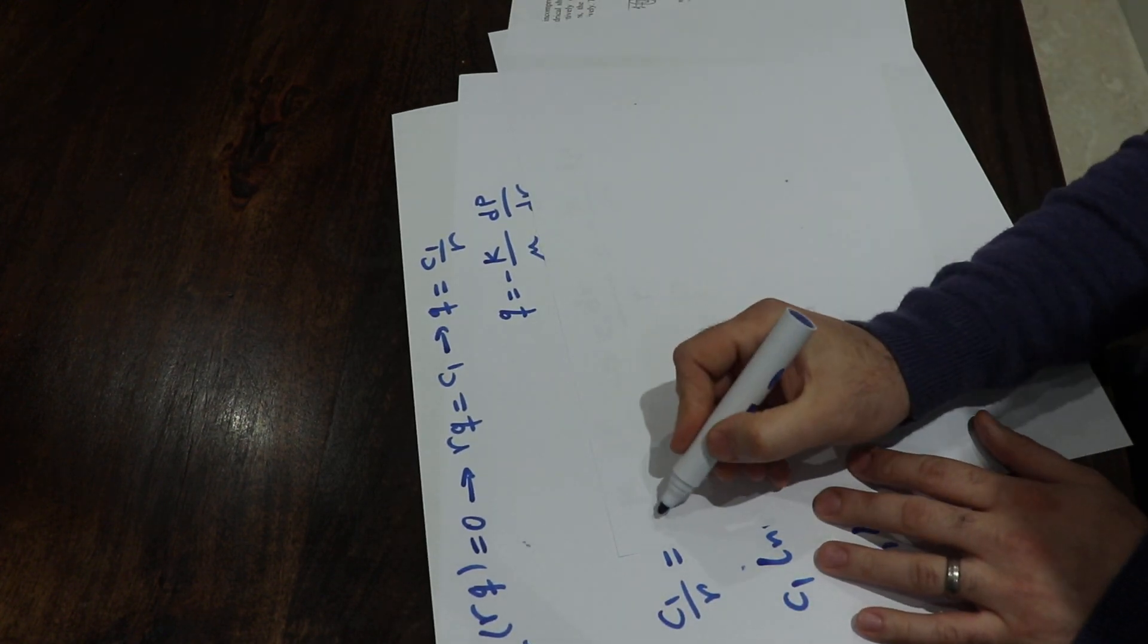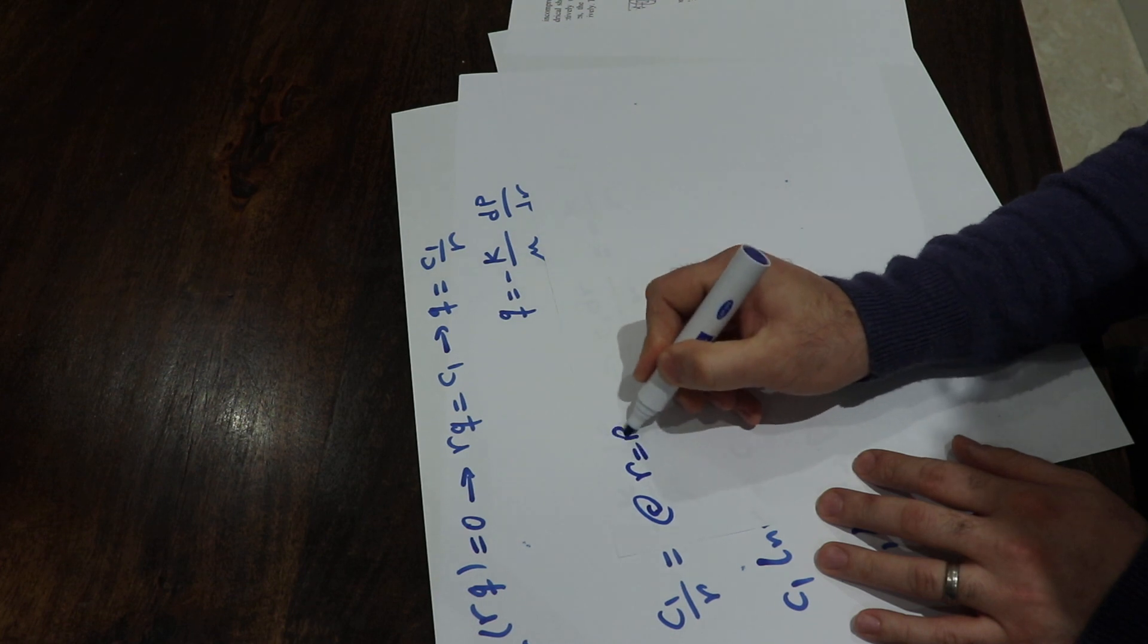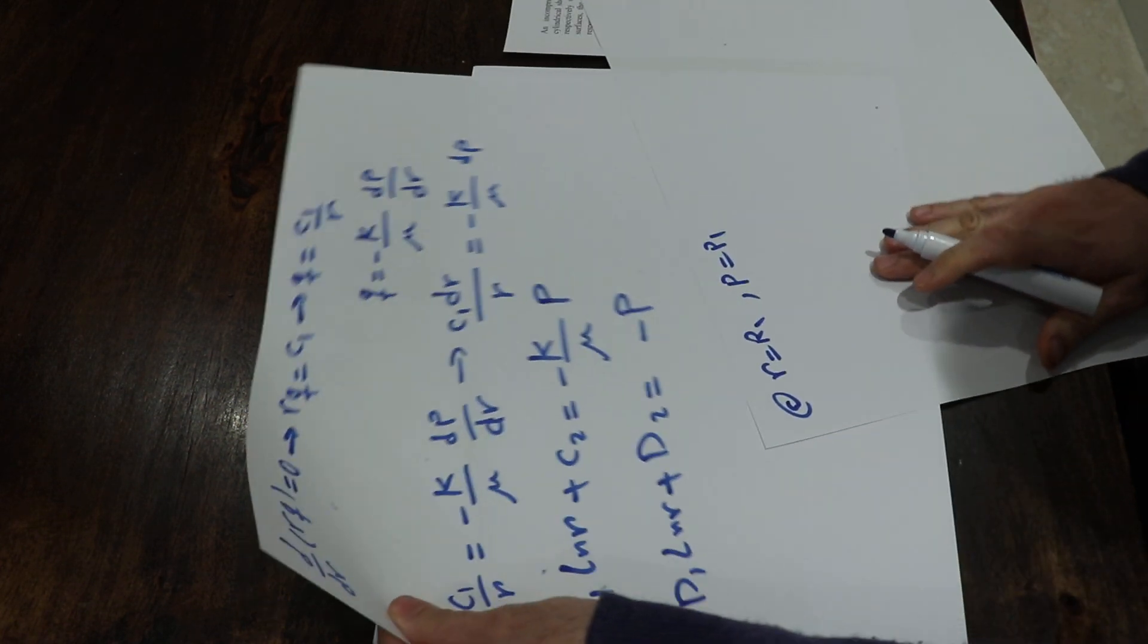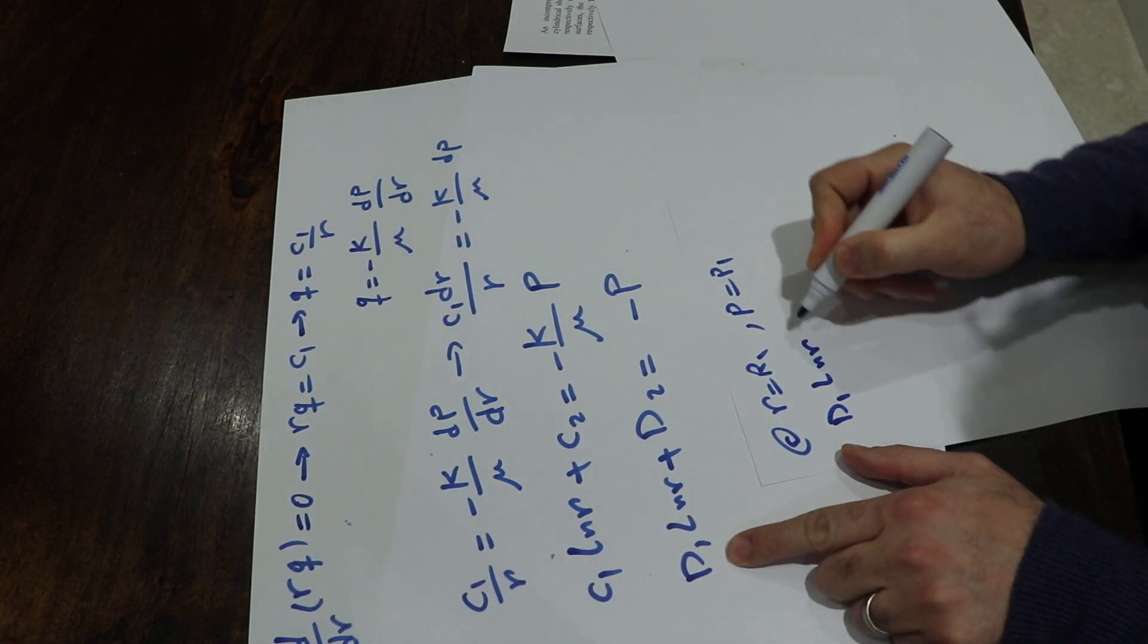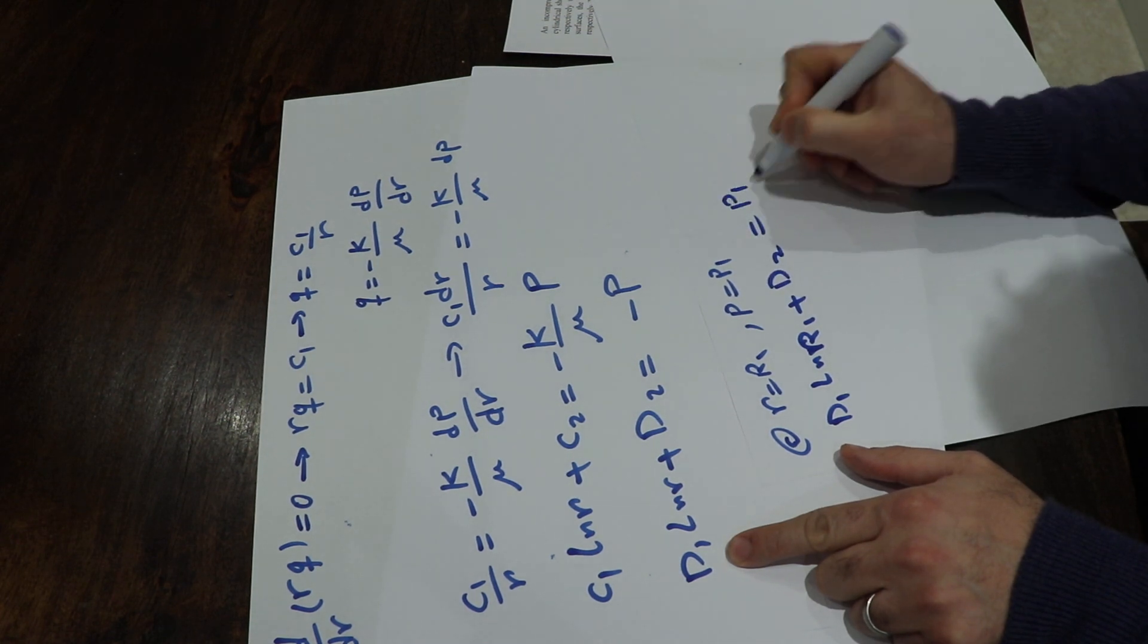The first boundary condition is that at R equal to R1, we know P is equal to P1. Therefore, you can write D1 ln R1 plus D2 is equal to minus P1.